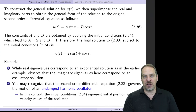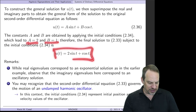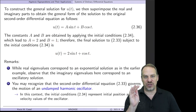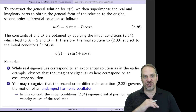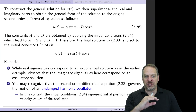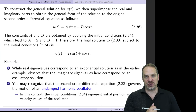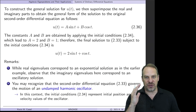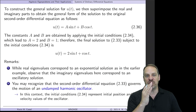Applying the initial conditions, we obtain A equals two and B equals one, giving the final solution. You can check this by substituting back into the original equation and verifying the initial conditions are satisfied. The imaginary eigenvalues produce sines and cosines — oscillatory behavior — which is exactly what we expect for an undamped harmonic oscillator. The physics and the math are beautifully married together.